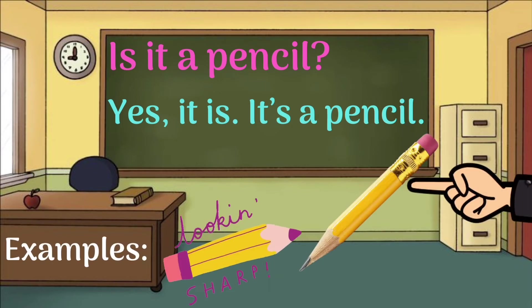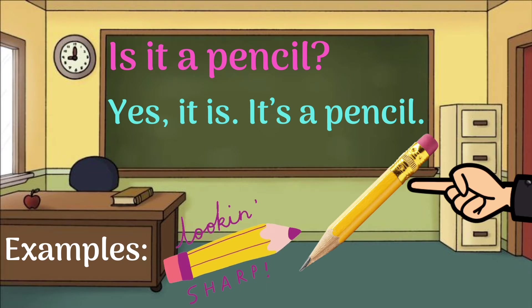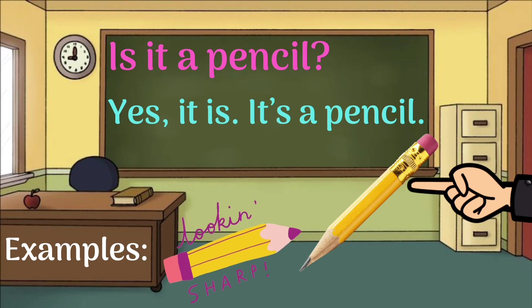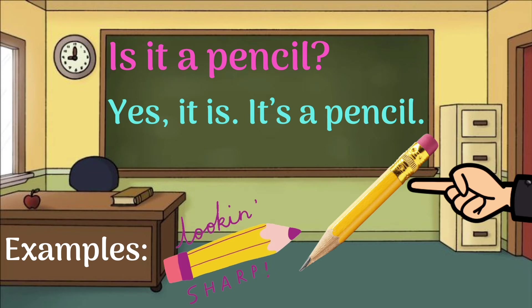Let's see the first example. The question says: 'Is it a pencil?' Now let's pay attention to the picture here. That's correct! So we have to say 'Yes, it is. It's a pencil.' In this answer we need to put 'Yes, it is,' and after that we need to tell the name of the thing: 'It's a pencil.'